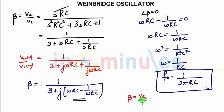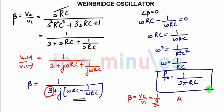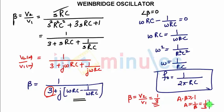The second condition says we should consider the real part: V₂/V₁ should be 1/3, that is the real part is 1/3. So if β = 1/3, and for A·β ≥ 1, then A should be greater than or equal to 1/β, which is 3.